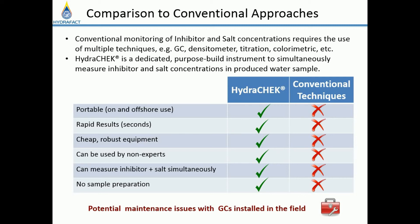Conventional inhibitor and salt concentration techniques require multiple methods — GC, densitometer, titration, calorimetric — none of which can simultaneously give concentrations of both salt and inhibitor, and all have limitations. HydraCheck is a dedicated purpose-built instrument to simultaneously measure inhibitor and salt concentration in produced water samples. Benefits include: portable, rapid (seconds), cheap and robust, usable by non-experts, no specific sample preparation required, and it can be automated.